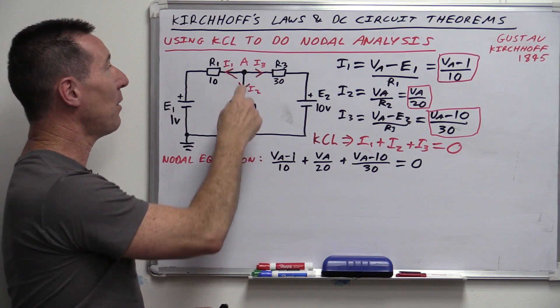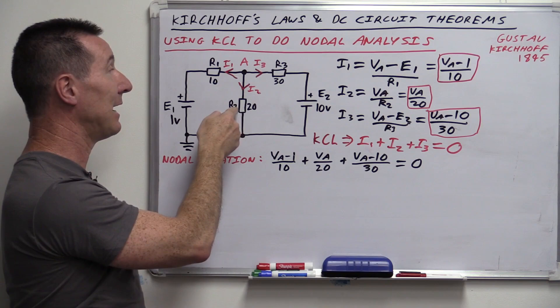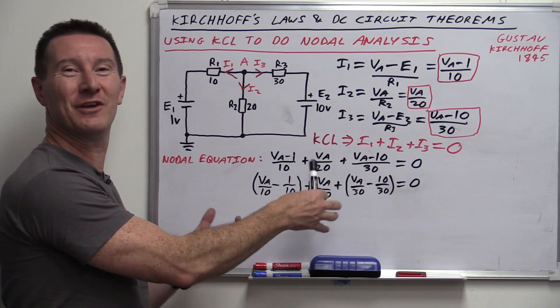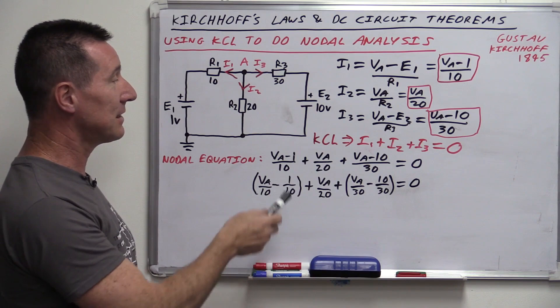Next up we have another DC circuit theorem: mesh analysis. Just like nodal analysis, this one uses Kirchhoff's laws — but instead of Kirchhoff's current law, it uses KVL: Kirchhoff's voltage law. Nodal analysis is typically used to calculate a voltage at a particular node or junction. But if you want to calculate a current — like our original question — then mesh analysis might be a better technique, because it's good at calculating currents in a circuit.